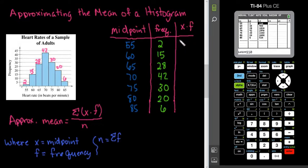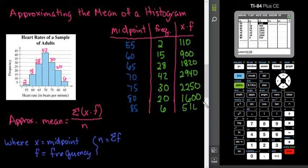So, for the first one, we have 110, 900, 1820, 2940. Sorry, 2250, 1600. And then, the last one is 510.